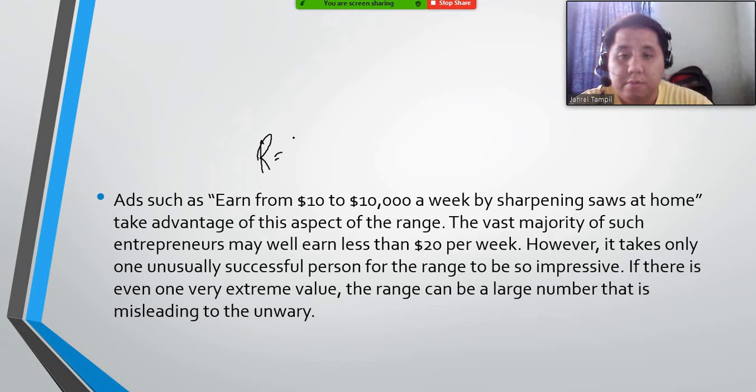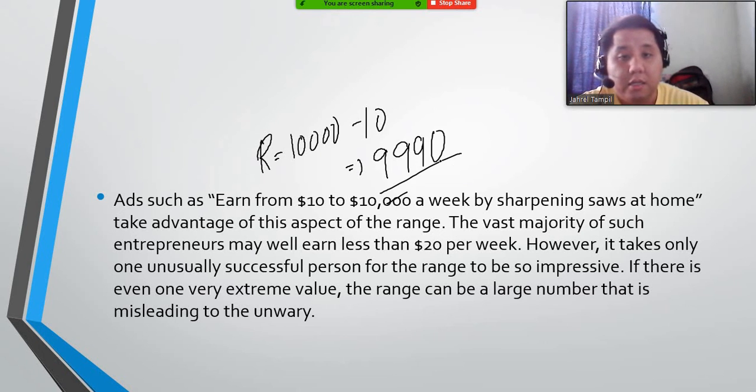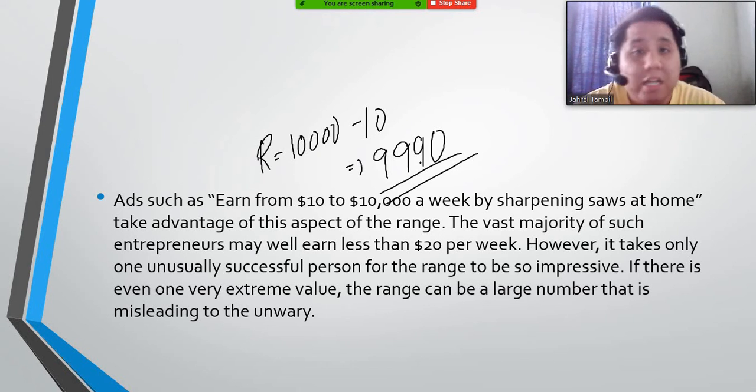So the range here will be from $10,000 minus $10. And that will give us actually $9,990. So the range of your income would be $9,990.